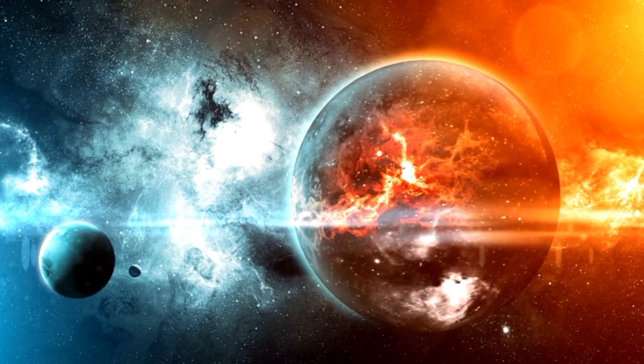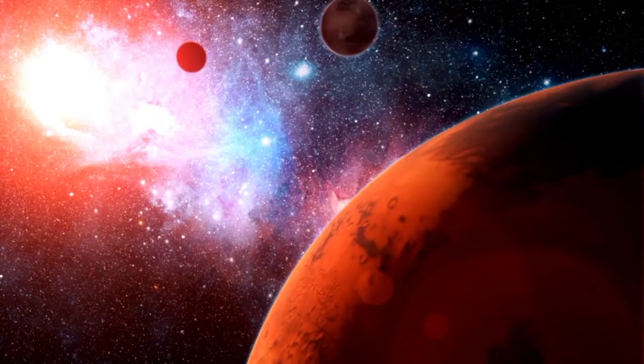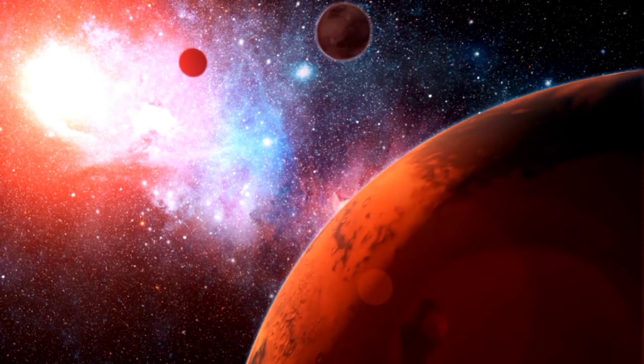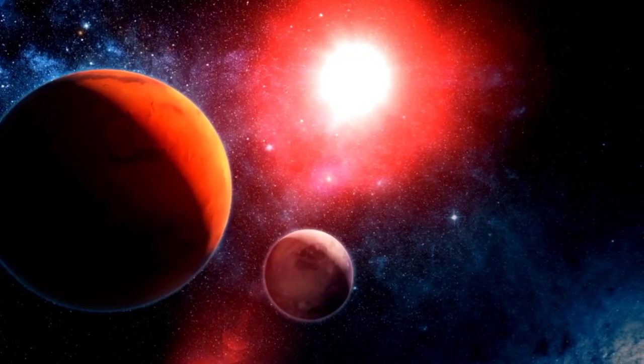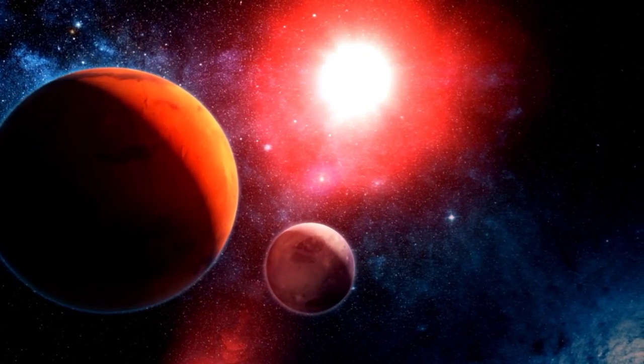Omicron b orbits its host star, Omicron, every 8.46 days at a remarkably close distance of just 6 million miles, 9.6 million kilometers, about one-tenth of the gap between Mercury and our Sun.